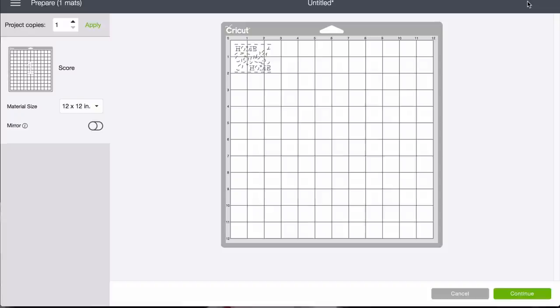The only tricky part of this is making sure your design lands on the foil. I move the design on the preview mat to match the position of the foil on the actual mat by simply counting squares.